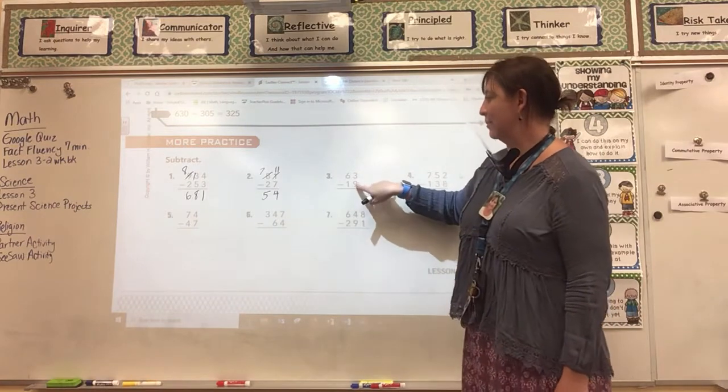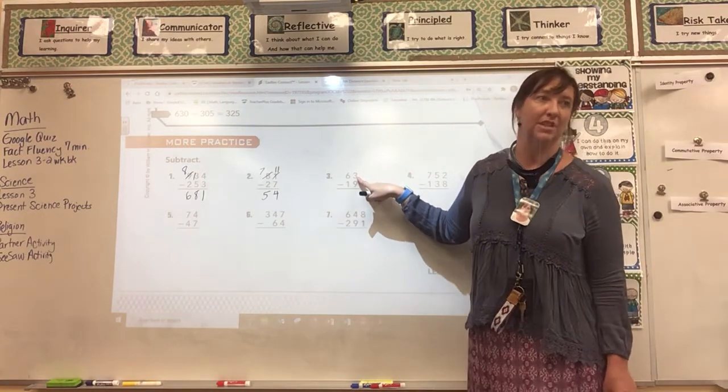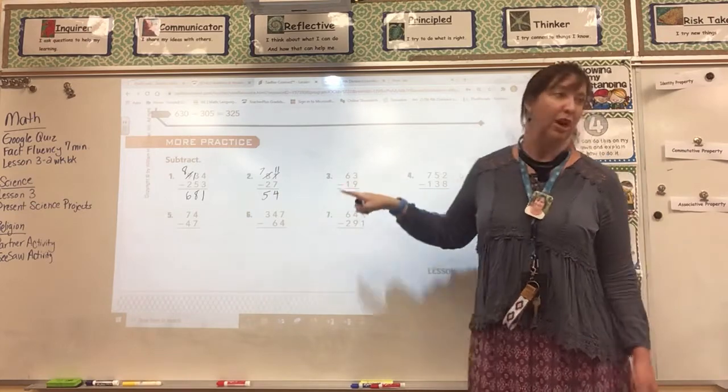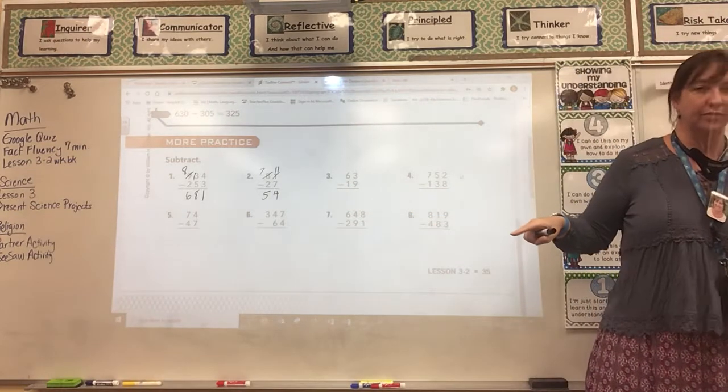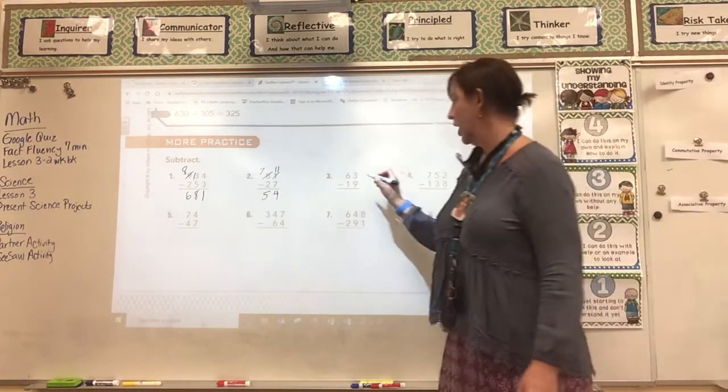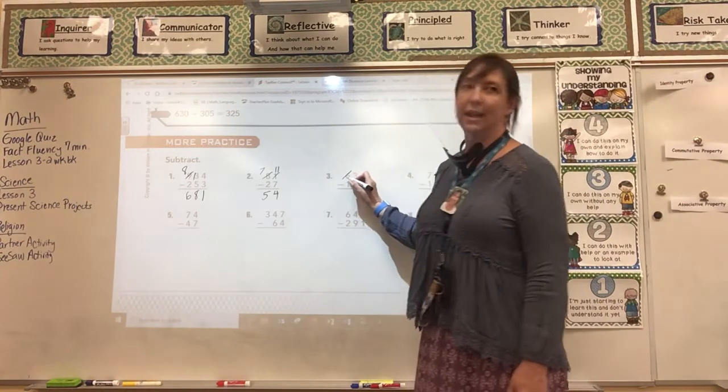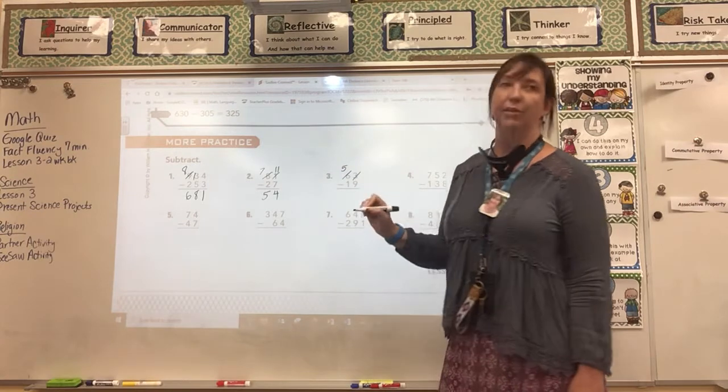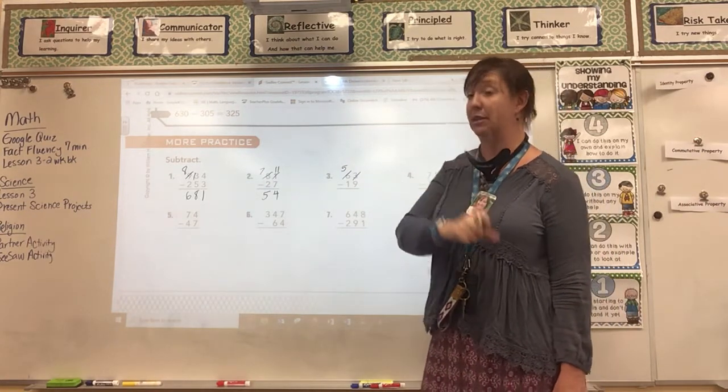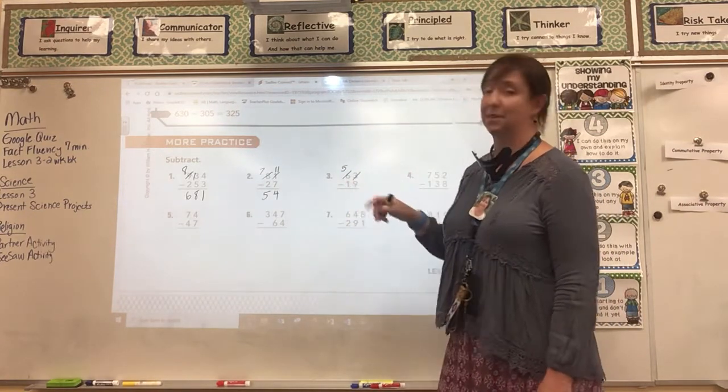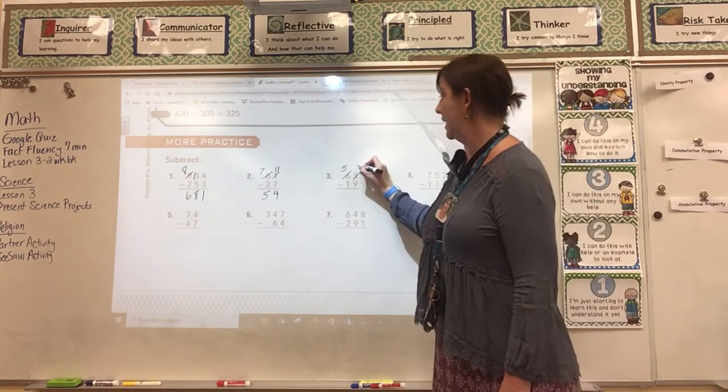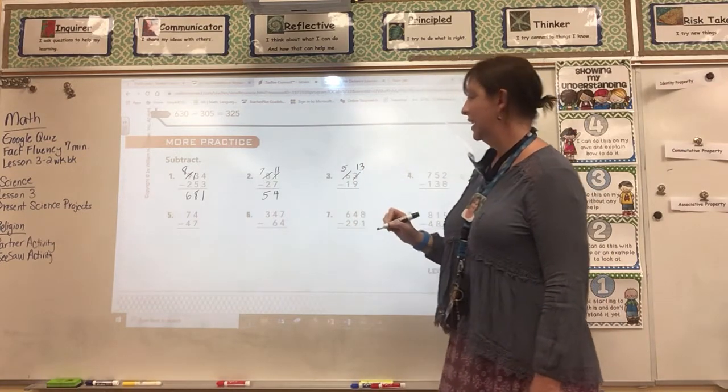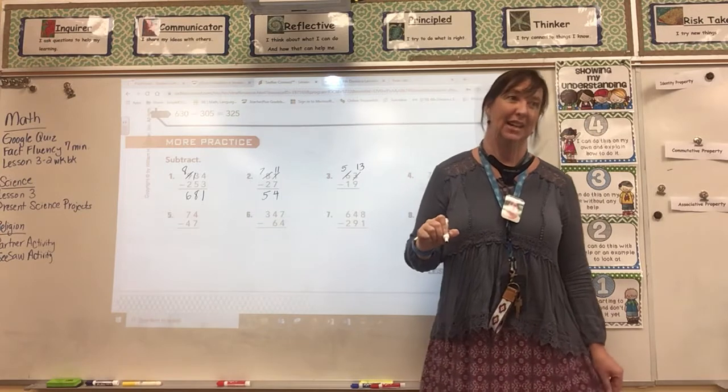I can't subtract 9 from 3 because 3 is smaller. So I have to borrow from the 6. I'm going to cross out the 6. It becomes a 5. The 3 becomes 13 because I borrow 10 from the 6 place. So if I borrow 10 and I have 13, what's 13 minus 9? 4.